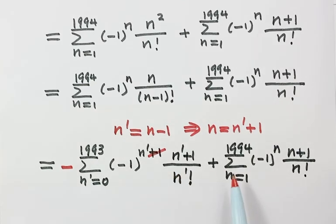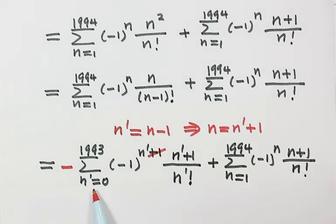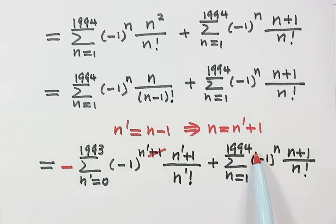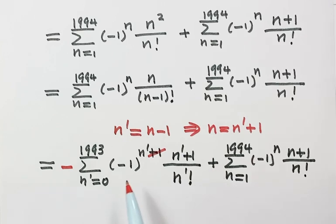Now let's compare these two sums. They have the same general term. But the first sum runs from n' equals 0 to 1993, while the second runs from n equals 1 to 1994. Also, one has a plus sign and the other has a minus sign.